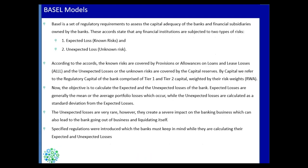Let's talk about the Basel models — the underlying theory behind Basel models, how they are made, and what the components are. Basel is a set of regulatory requirements covering the capital adequacy of banks, and they mostly cover two types of risk: expected loss, which is the known risk, and unexpected loss, which is the unknown risk.